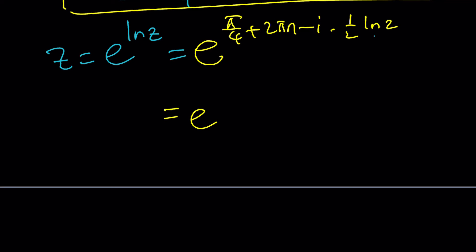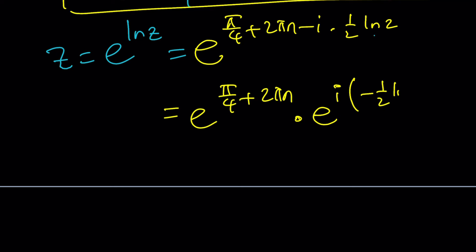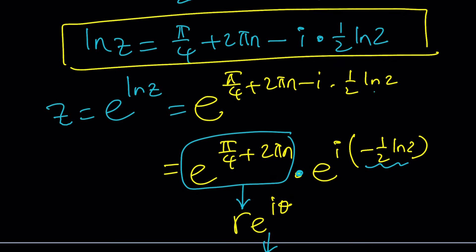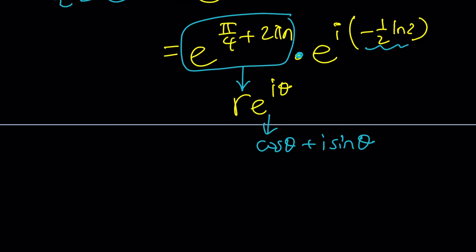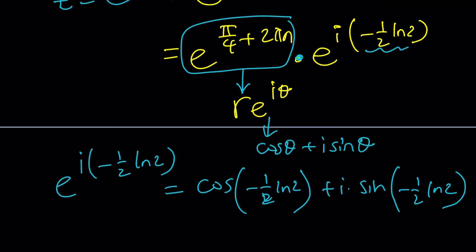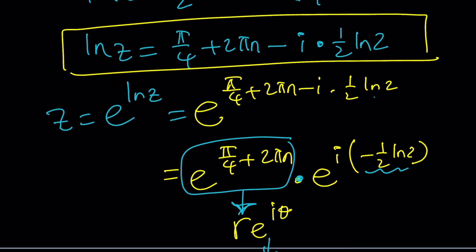You can separate these two things and write this as e to the power i times negative 1 half ln 2. So that now this becomes r e to the i theta form, which is Euler's exponential or polar form. This would be your r, and this would be your theta. And then for e to the i theta, you can use cosine theta plus i sine theta, and write that in standard form if you want. But exponential form is more compact. In the standard form, it's just going to look crazy. For example, e to the power i times negative 1 half ln 2 would turn into cosine of negative 1 half ln 2 plus i times sine of negative 1 half ln 2. And then you can just multiply it by this gigantic r, and you'll get the answer. No need to do that. You can leave it like that. That's the solution.